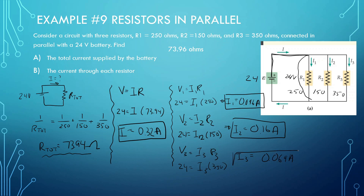The one with the most current is the second one because it has the least amount of resistance — current wants to go through the path of least resistance. Also, if you add up these three numbers, they equal the total current.